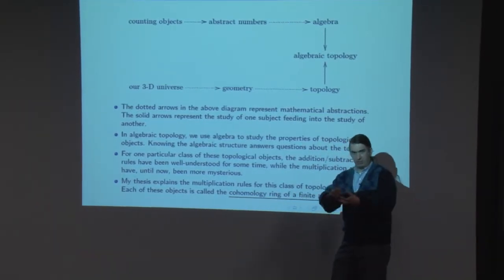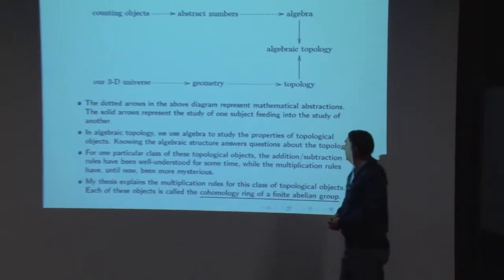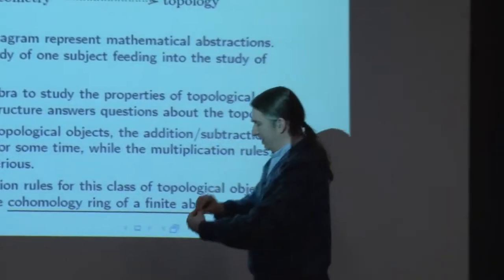If we could turn one into another without ripping it apart or punching holes in it we call those objects really the same thing. So two donuts glued together is the same as a pair of pants in topology.